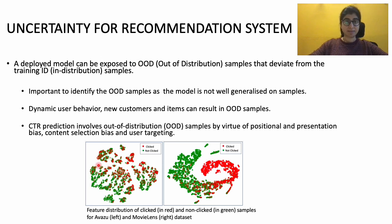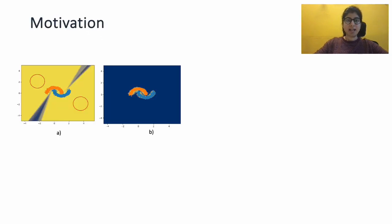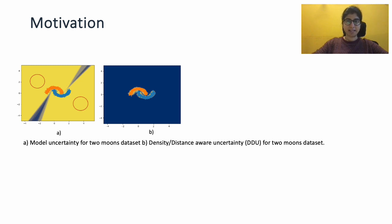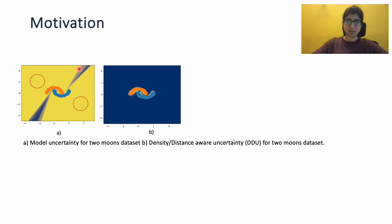We observed the recommendation system setting differs from the classification setting because of class overlap and imbalance, as shown in the figure. We plot the uncertainty for the two-moon dataset to show the classification setting. Figure A shows the model uncertainty using deep ensemble, and Figure B shows the distance-aware uncertainty. Distance-aware uncertainty quantifies the distance of a test sample from the training data manifold. Yellow denotes the low uncertainty region, blue denotes the high uncertainty region, and the red circle denotes the failure mode for the algorithm.